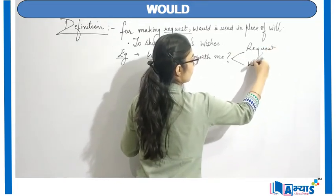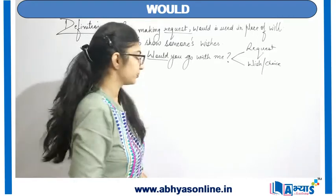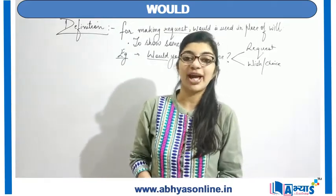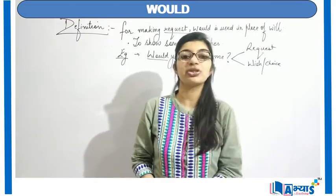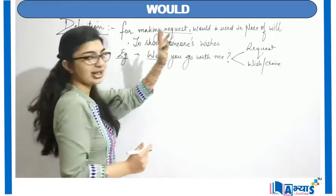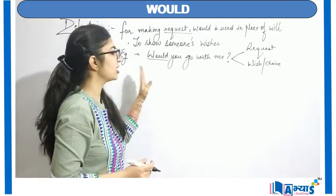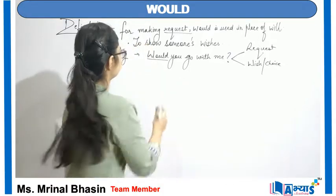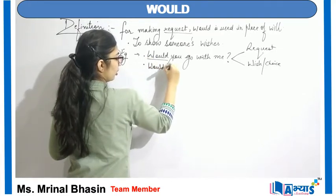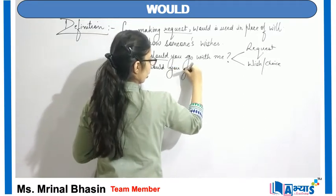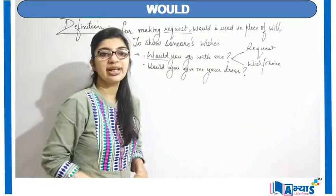So the first usage of 'would' indicates a request, and it also indicates the wish or choice of a person — the person can say yes or no. In today's video we are going to understand different areas where 'would' can be used. The first is for making requests. For example: 'Would you go with me?' and 'Would you give me your dress?' — all these are examples of making a request.